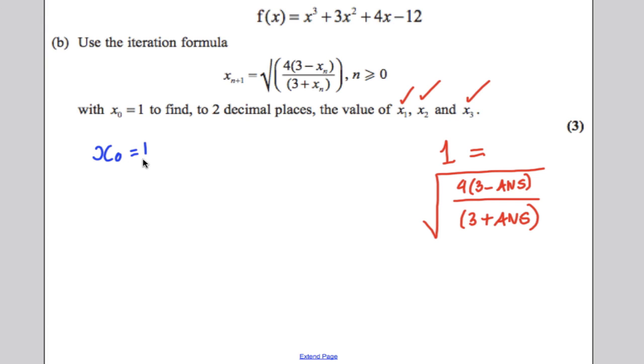So, x0 turns out to be 1, x1 turns out to be 1.41, x2 turns out to be 1.20.